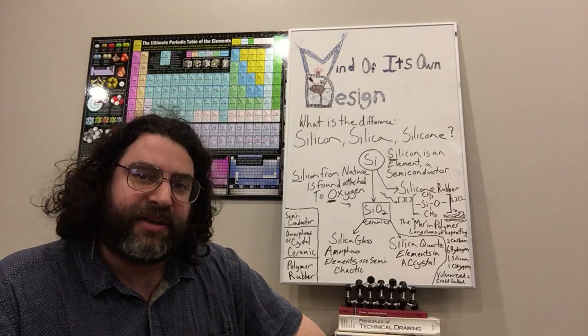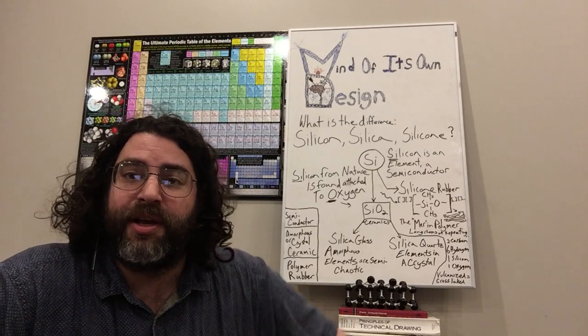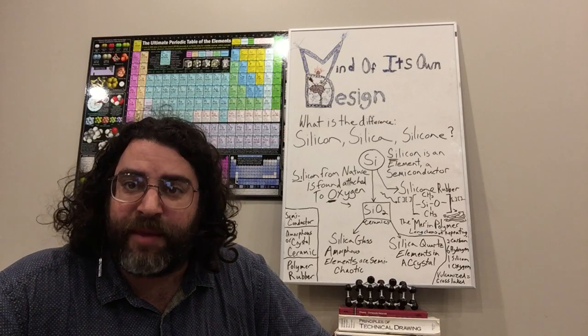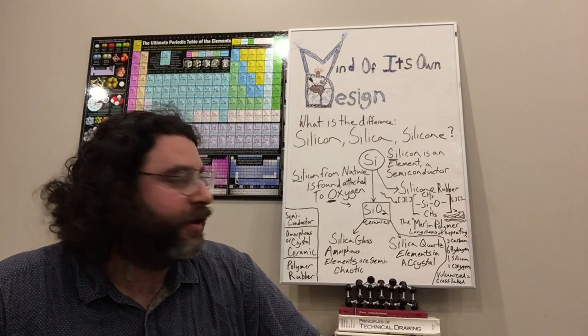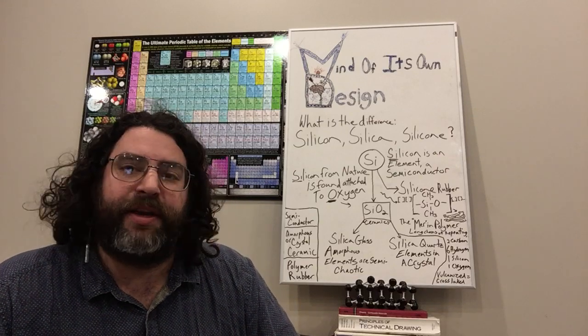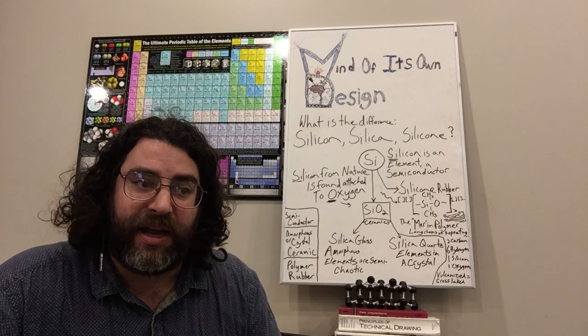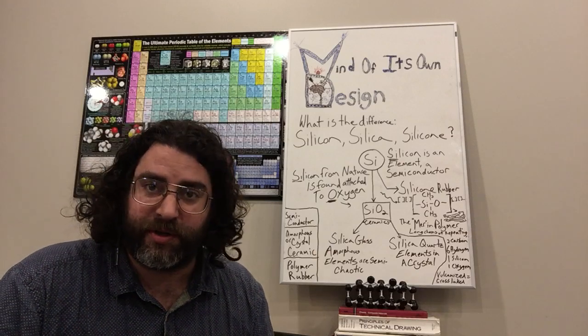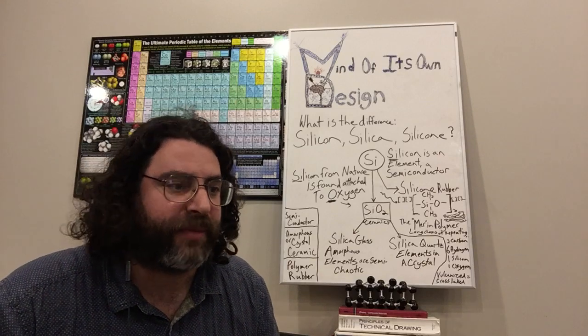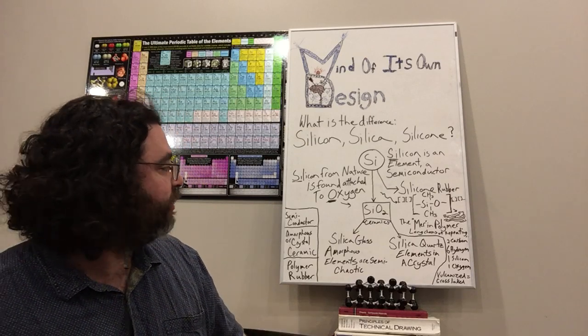Silica glass is amorphous, which means that it doesn't have a long range order, and that the elements are arranged semi-chaotically. They still obey physics and chemistry rules that dictate which one will be bonded to which, for the most part. But if you pulled back, like you did with the crystal, then you would see in silica glass, you don't see a long range order. And the atoms are spaced out more, which allows glass to be more transparent than quartz.